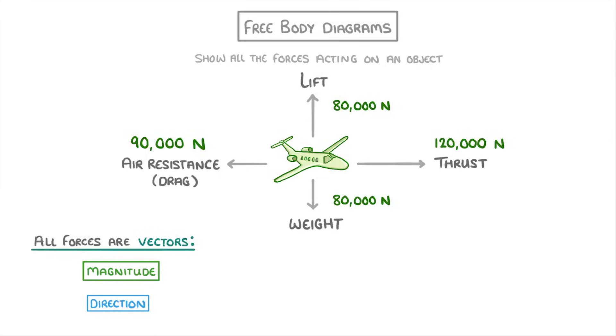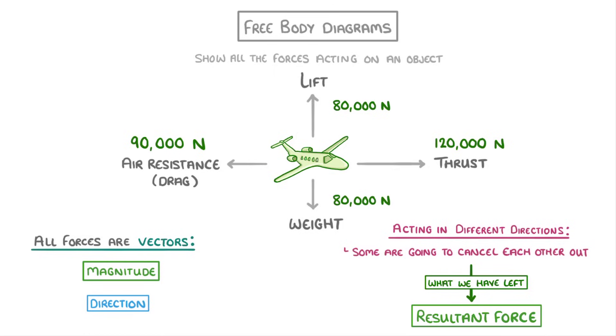Now, because all these forces are acting in different directions, some of them are going to cancel each other out. And once we've taken that into account, what we'd have left is the resultant force, which we can describe as the overall force on an object.